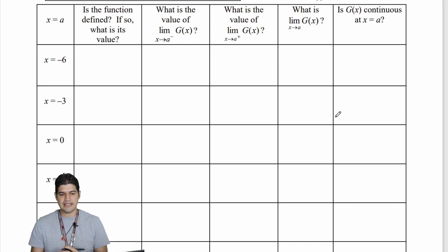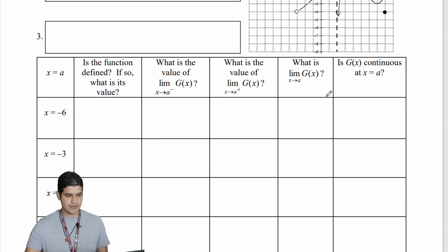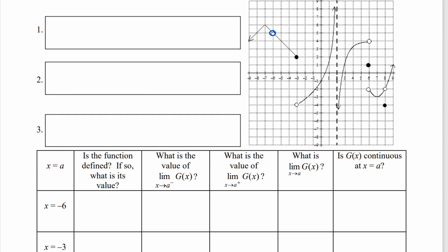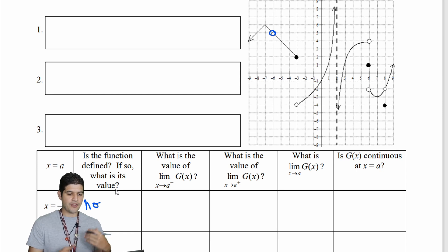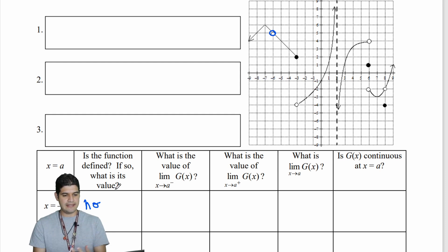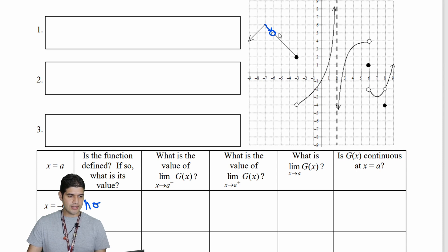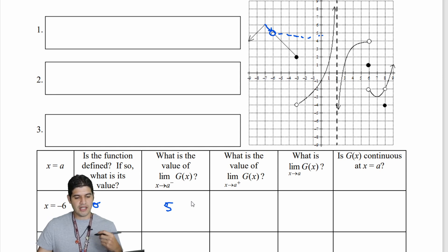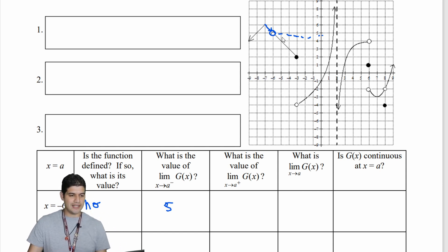Our first x value is x equal to negative 6, and we want to say: is the function defined? The function is not defined there. Now the question asks: what is the value of the limit of g of x as x approaches negative 6 from the left side? Following from the left side, it looks like we're approaching positive 5. So I'll put positive 5 here.